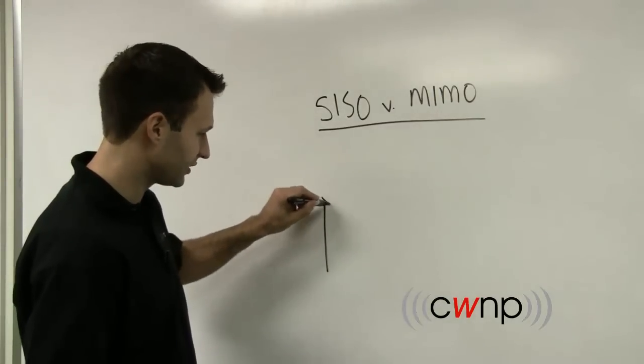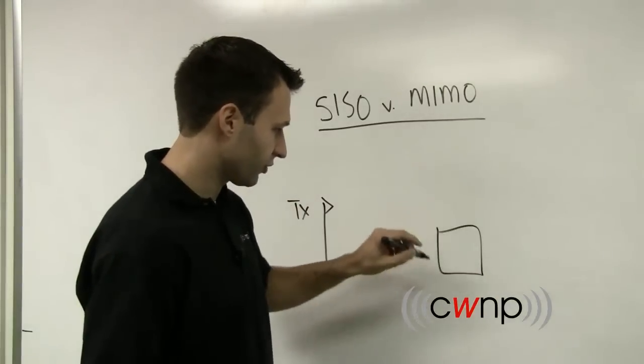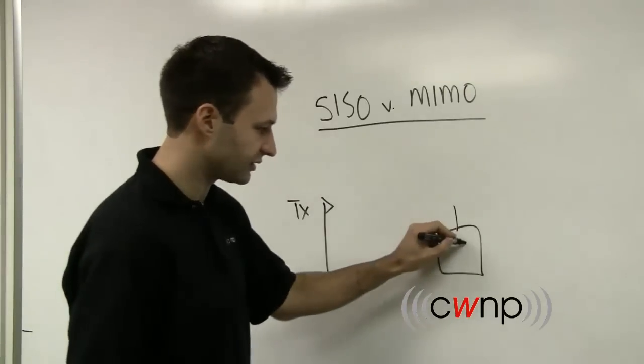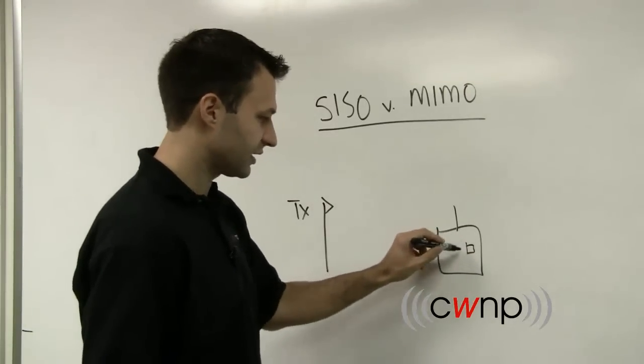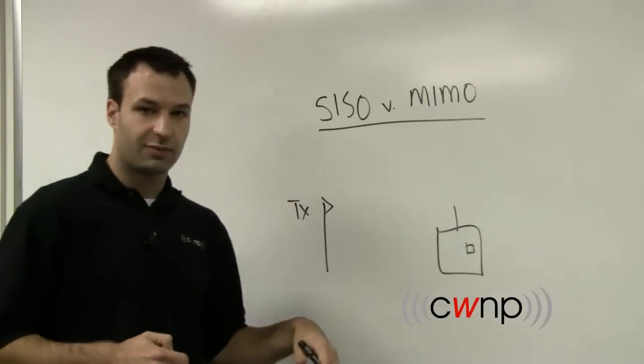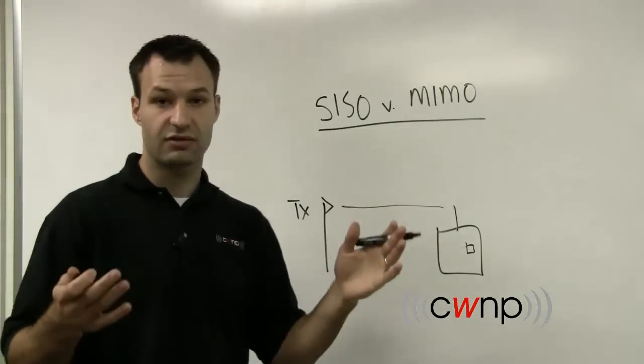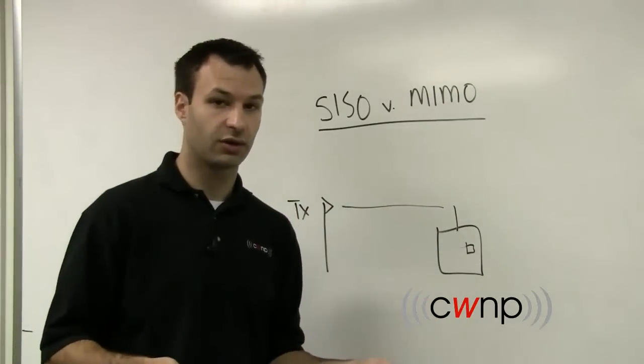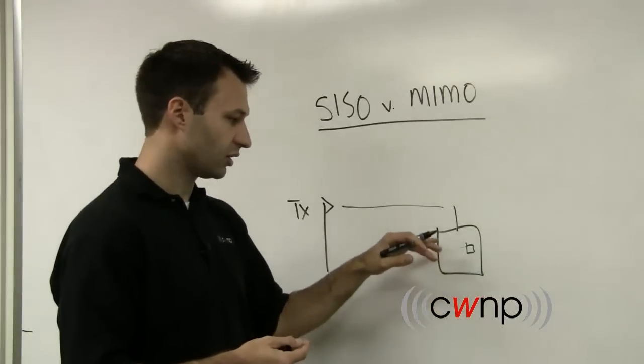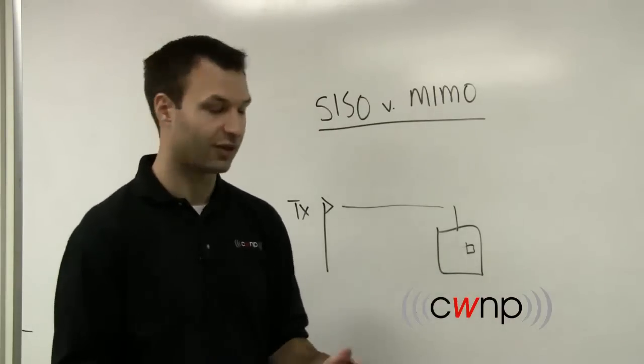Now, this technology is pretty simple. So draw a transmitter there and then an access point here, and we're going to give this access point just one antenna and one radio. That antenna connects to the radio, and when this transmitter transmits a signal, this access point can only receive on one antenna. Obviously, it only has one antenna, but that's how the technology with single input, single output works. You have only a single antenna to receive and a single antenna to transmit.